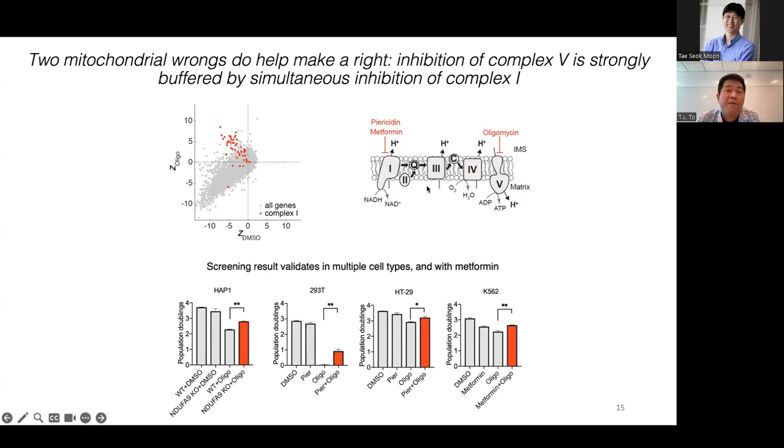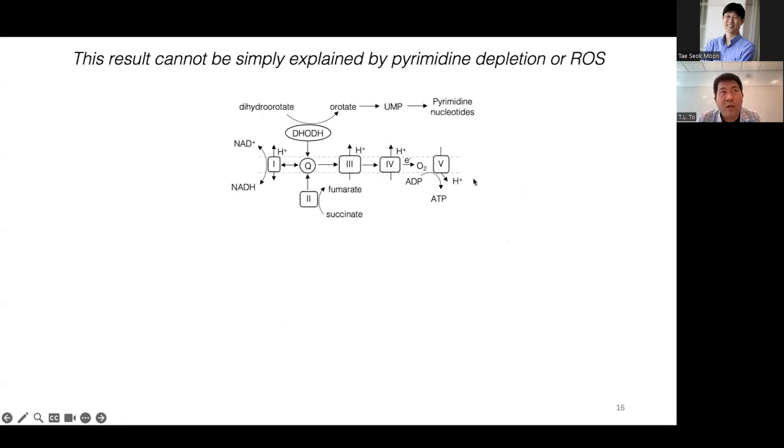So what I'm showing here is that when we block complex five, the ATP synthase with oligomycin, almost all subunits of complex one score as suppressor, meaning if you lose complex one subunit, the cells actually grow better under complex five inhibition. So that's a pretty weird result. And because all the genes actually, all the subunits of complex one actually score, there's not really any structural or functional determinant within complex one that spotlight the interaction. But anyway, we were able to really confirm this result in multiple cell types with genetic knockout, as well as with piericidin or metformin. And in all these cases, the combination of complex one and complex five inhibition actually causes cells to proliferate better than complex five inhibition alone. So this is pretty weird, but we can actually reason this from first principle.